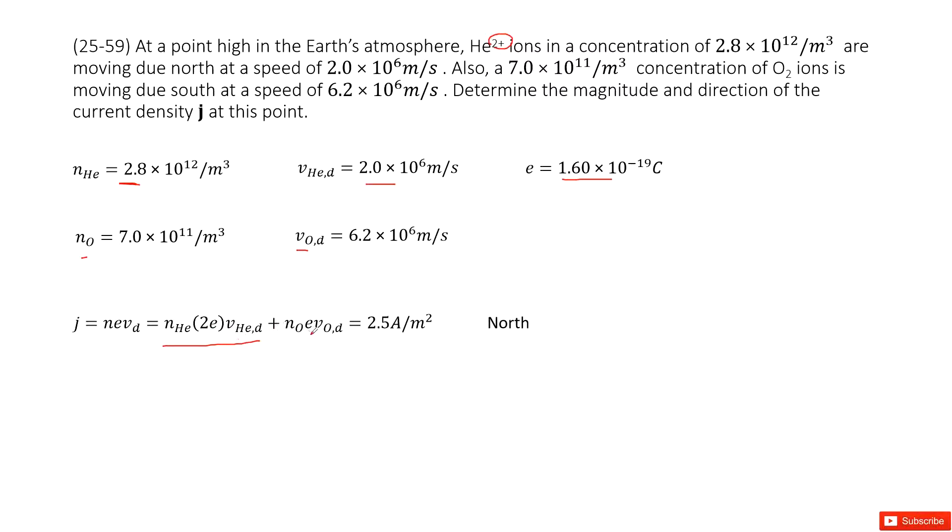The next one we look at is the oxygen. The oxygen we can see is n_O, and the charge it carries is 1e, and then the drift velocity is there. Input all the given quantities, we get the answer there.